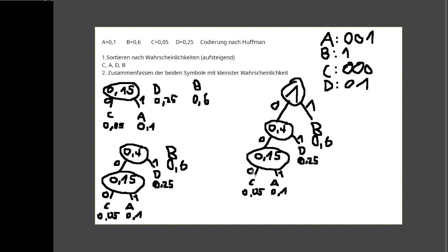B hat mit 0,6 mehr als die Hälfte der Eintrittswahrscheinlichkeit und bekommt nur ein Bit zugeordnet. Das heißt, in 60% der Fälle reicht uns ein Bit, um zu entscheiden, welches Zeichen dahinter steckt. Das Ganze ist auch eindeutig.